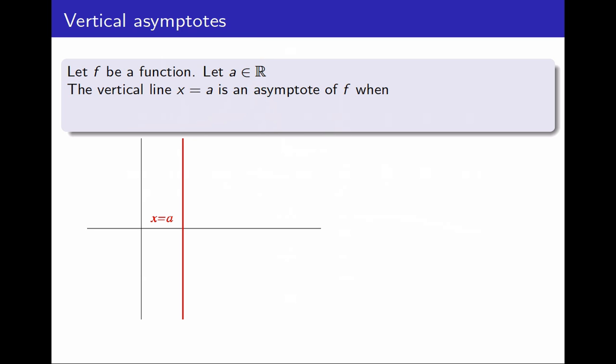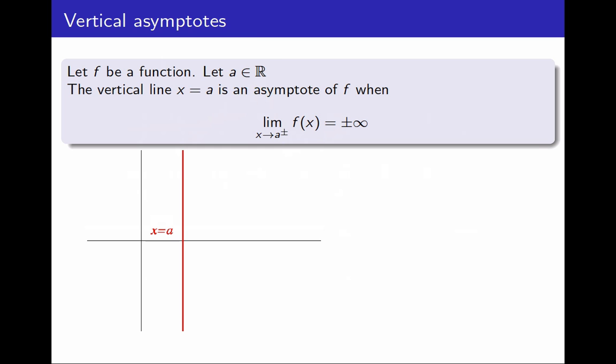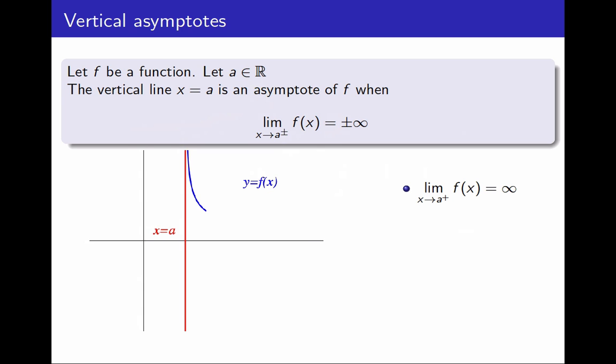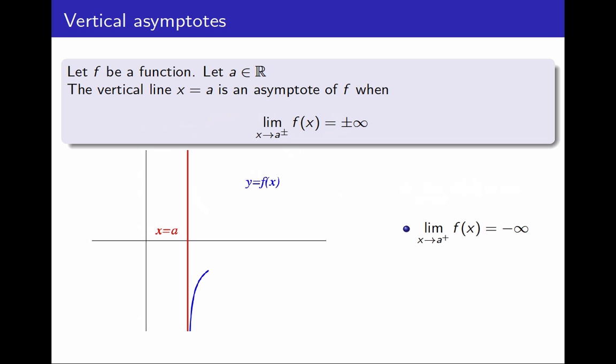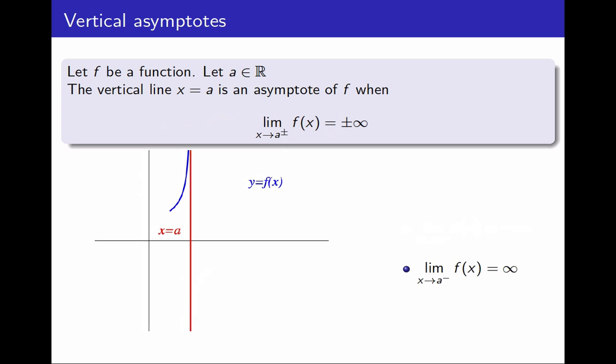That means for the graph of f. According to our intuition, that means the limit as x approaches a, either on the left or on the right, of the function is either plus or minus infinity. Notice there are four conditions here, and I only need one of them — as long as one is satisfied, I have a vertical asymptote. For example, if the limit as x approaches a on the right of f is infinity, the curve approaches the vertical line and they become arbitrarily close. If instead the limit is minus infinity, I get something like this. And if I have the limits on the left of a, the equivalent thing happens.